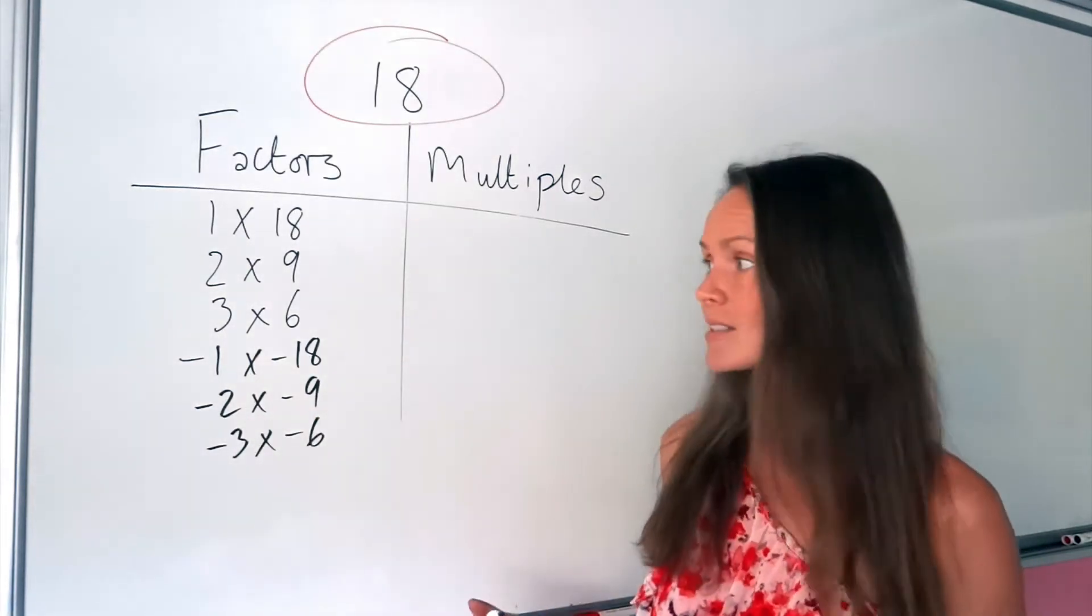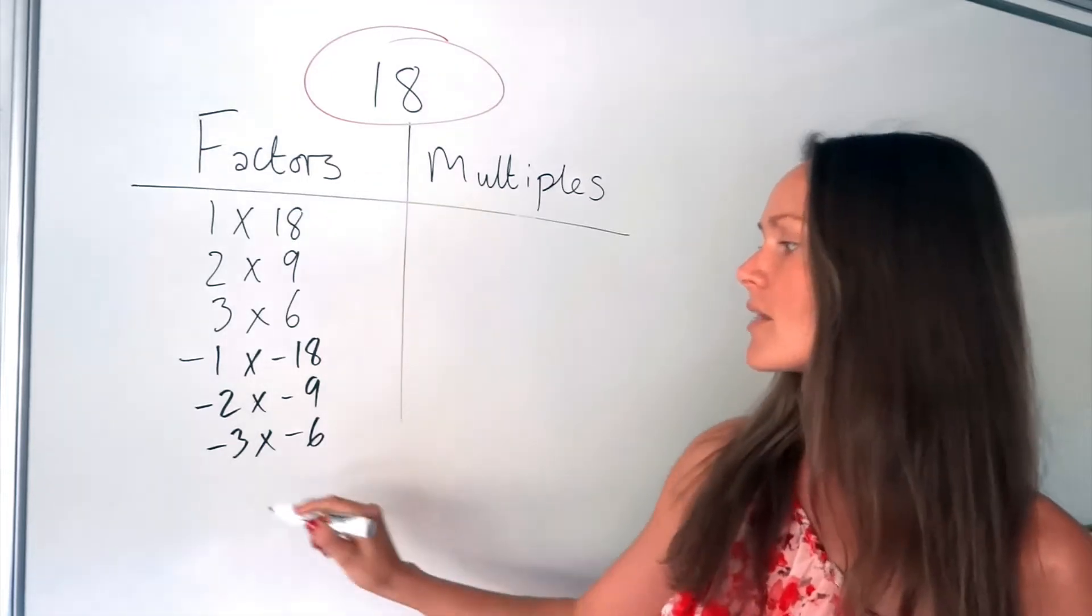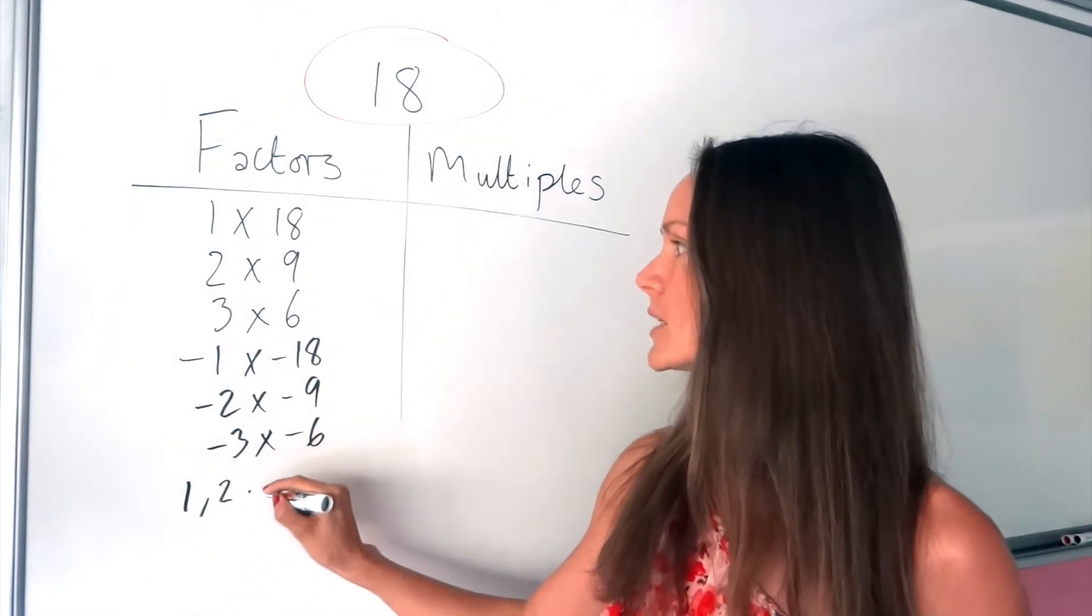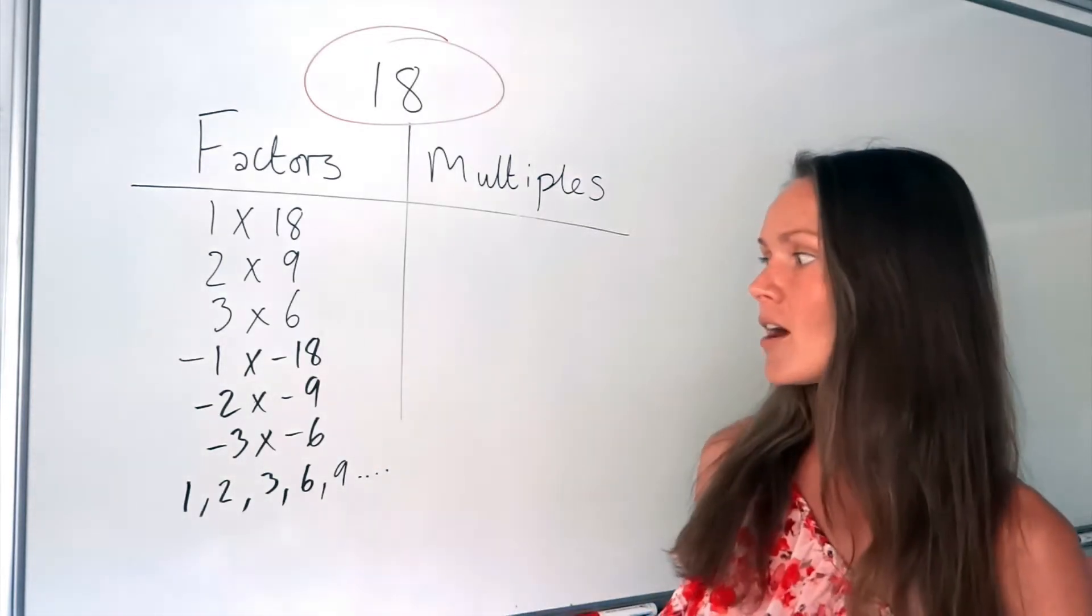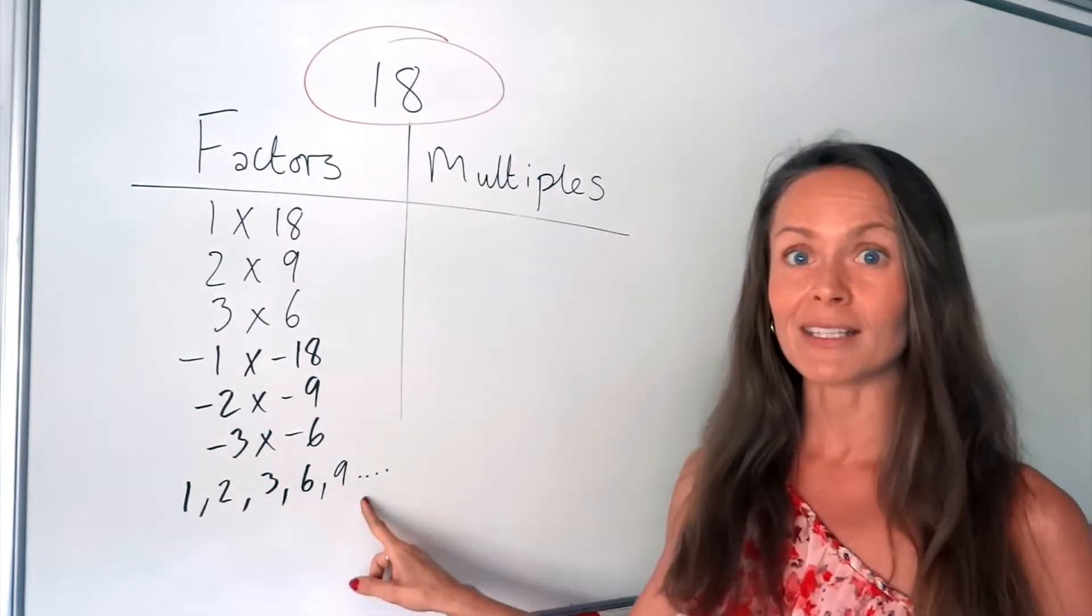So if it asks you to list the factors, don't leave it like this. Just leave them written out like this, for example. And I just put dot, dot, dot. Okay? So these are the factors of 18.